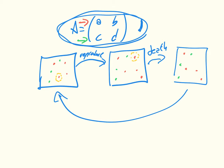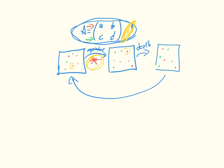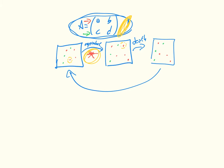This step — how we define the probabilities with which we select individuals — is the important one, and it comes from the matrix itself. So we write F1I to be the fitness of individuals of the first type when there are I individuals of the first type.